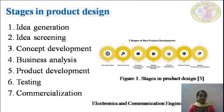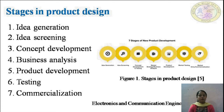The stages in product design — there are seven stages. The first is idea generation. Second is idea screening. Third is concept development. Fourth is business analysis. Fifth is product development. Sixth is testing. And the seventh is commercialization.